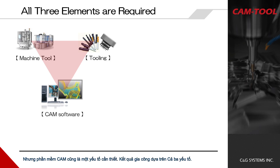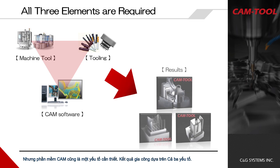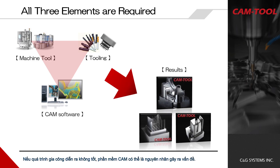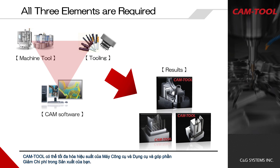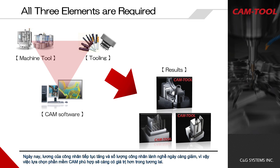Machine tools and toolings are very important elements for high-level machining, but CAM software is also an essential element — machining results rely on all three. If machining is not going well, CAM software could be the cause. CamTool can maximize the performance of machine tools and toolings and contribute to cost reduction in your manufacturing. Nowadays, workers' salaries continue increasing and the number of skilled workers is decreasing, so choosing proper CAM software should be even more valuable going forward.